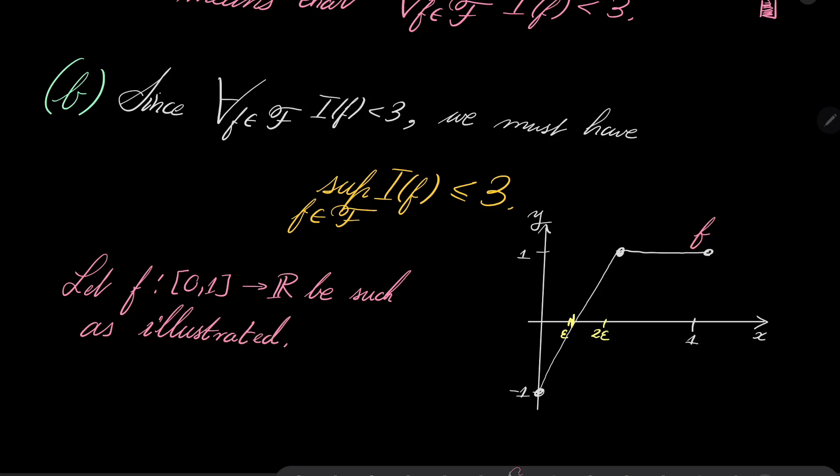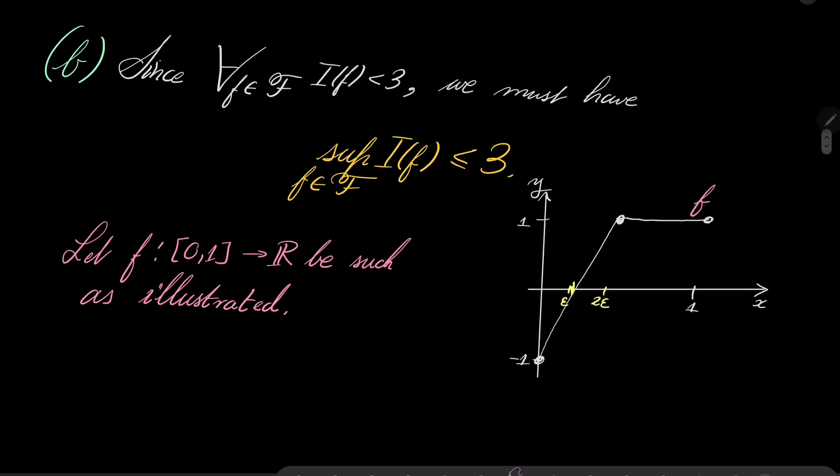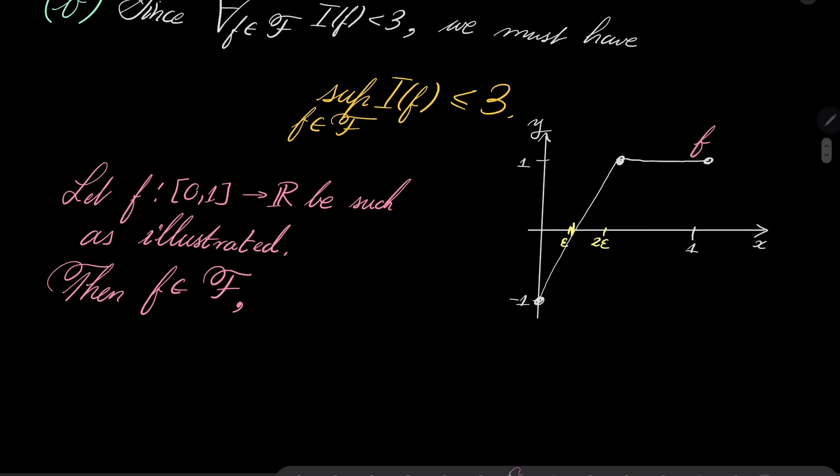Notice that this type of function is continuous, of course. Its maximum is 1. And what is I(f) of this function? So let f go from [0,1] into the set of real numbers be such as drawn, as illustrated. Now notice that of course this function f is in our family. It's continuous, its maximum is 1. And what is I(f)?